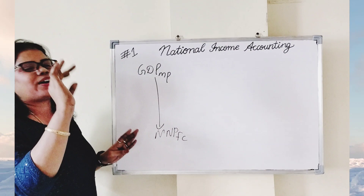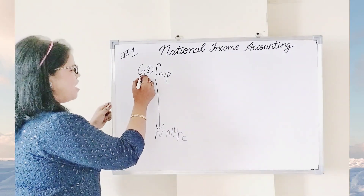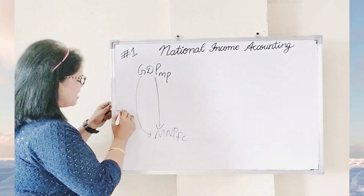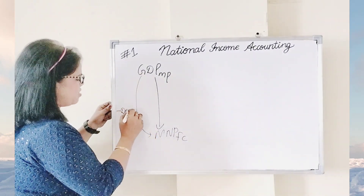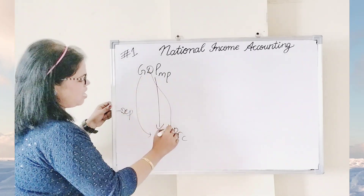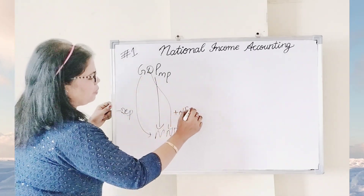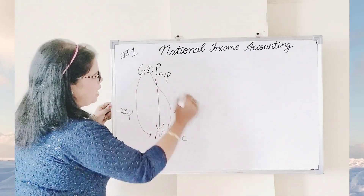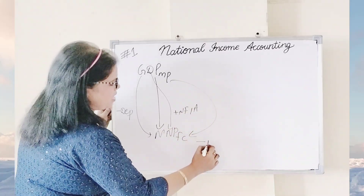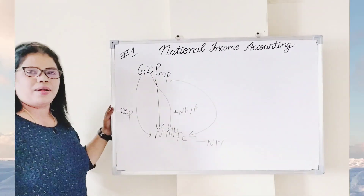There is a song that everyone knows. G to N: minus depreciation. D to N: plus net factor income from abroad (NFIA). MP to FC: minus net indirect taxes (NIT). Very simple.